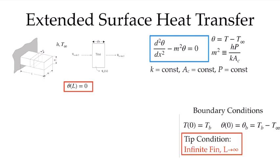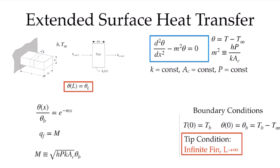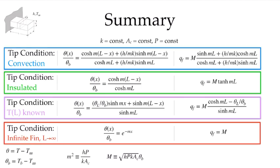Finally, for the last case, when we assume the fin is so long that it's in equilibrium with the surrounding environment by the time we reach the end: T at L equals T_infinity, so the reduced temperature theta at L equals zero. The solution is the simplest of all — the non-dimensional reduced temperature is simply e to the minus mx, with lowercase m as defined previously. Taking the derivative and applying Fourier's law gives the total fin heat transfer rate as capital M, with the same definition as before. Let's summarize all these equations and the different parameters we've defined to characterize them. For the different conditions, you can use all of these, and we'll look at them in subsequent videos.